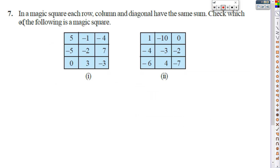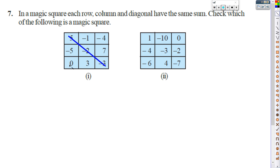Look at question number 7. In a magic square, each row, column and diagonal have the same sum. Check which of the following is a magic square. A magic square is a square filled with numbers. If you add the numbers row-wise, you should get the same answer. Adding column-wise must also give the same answer, and adding diagonally must also give the same value. If it satisfies all these conditions, then we can call the square a magic square.